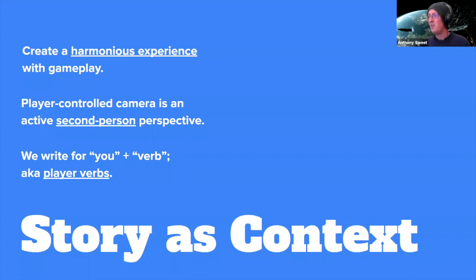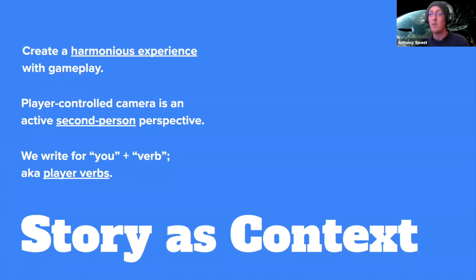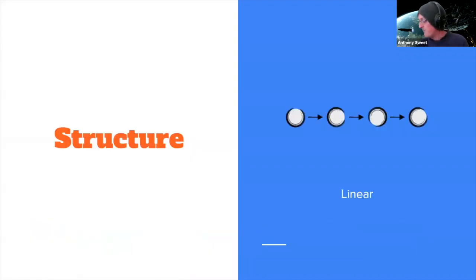That's a very quick, small look at story as context and how it works with gameplay. The next thing I want to talk about is structure in games — particularly the idea of nonlinear structure, which I know both Anna and I have discussed with others. When we talk about nonlinear structure in games, we're not necessarily talking about a nonlinear timeline like flashbacks in films.